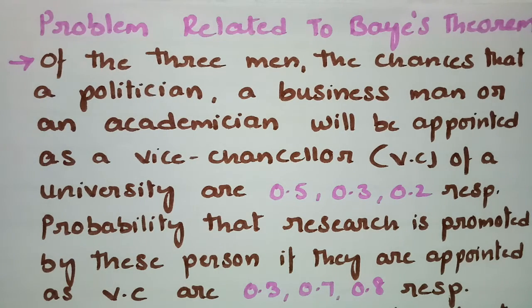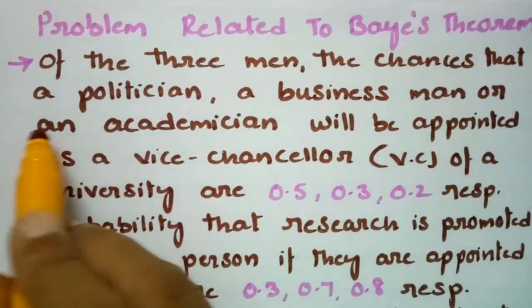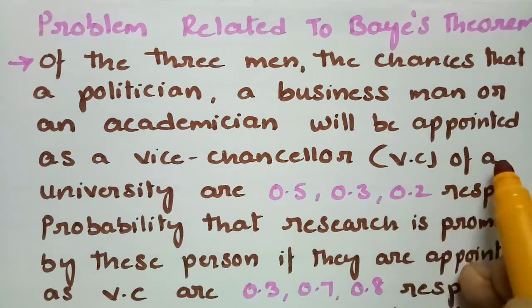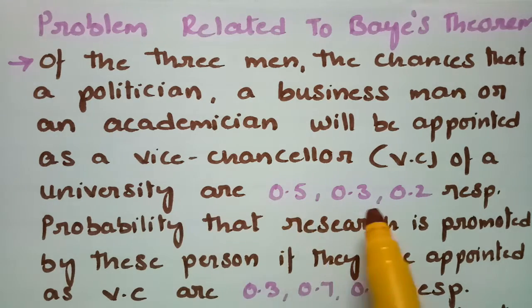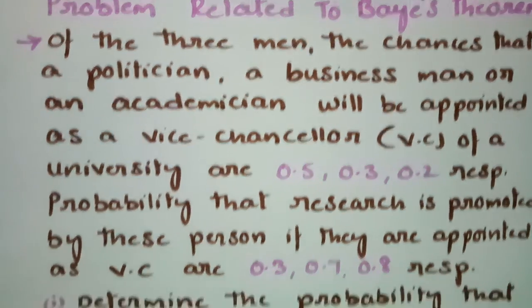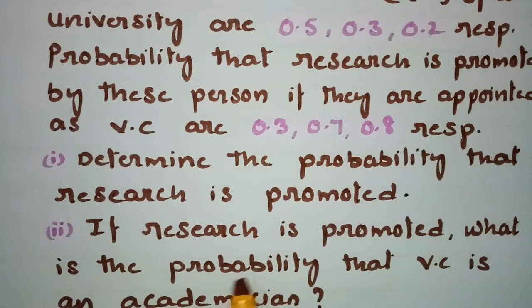This problem is on Bayes theorem. Of the three men, the chances that a politician, a businessman, or an academician will be appointed as Vice Chancellor of the university are 0.5, 0.3, and 0.2 respectively. The probability that research is promoted by these persons if appointed as VC are 0.3, 0.7, and 0.8 respectively. Determine the probability that research is promoted, and if research is promoted, what is the probability that the VC is an academician?